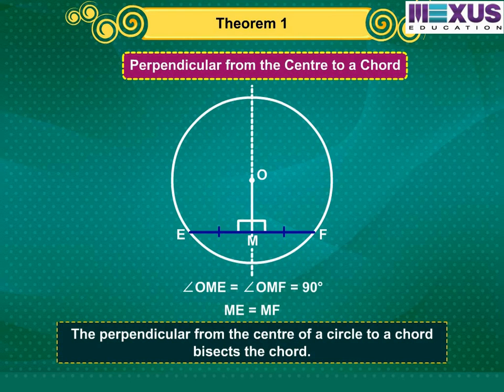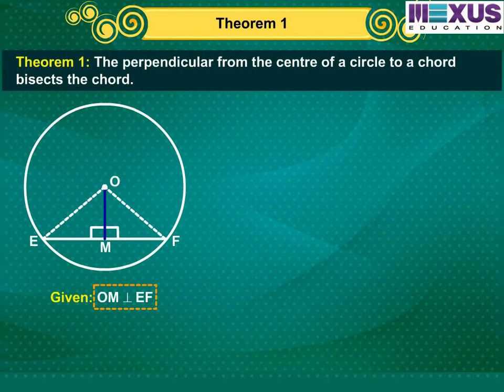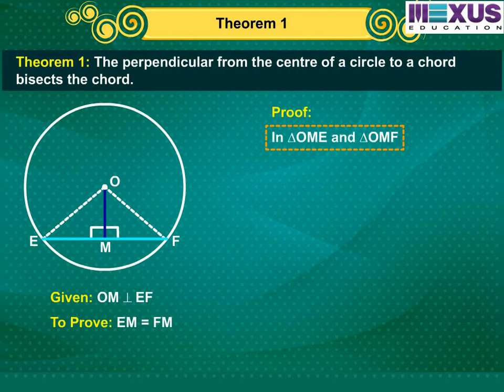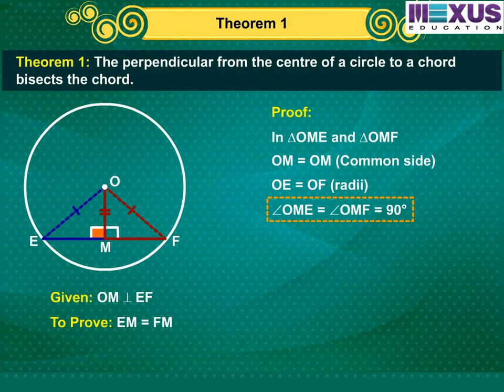This states that the perpendicular from the center of a circle to a chord bisects the chord. We can get the proof by joining OE and OF and proving the right triangles OME and OMF to be congruent. Given that the perpendicular from the center of a chord is drawn. Now in triangle OME and OMF, OM is equal to OM, OE is equal to OF radii, and angle OME is equal to angle OMF right angles.